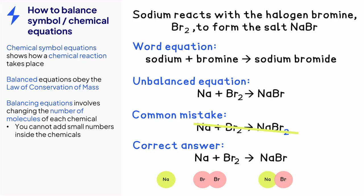To balance the bromine atoms, we need a second sodium bromide product. This means that the sodium atoms are now unbalanced, as there are two sodiums on the right-hand side. So, we need a second sodium atom on the left-hand side.